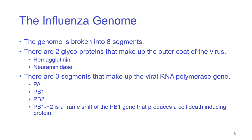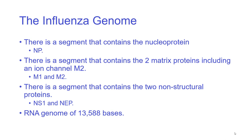The other internal proteins not expressed on the outside of the virus include the nuclear protein. There are matrix proteins: the M2 protein, which is an ion channel that goes through the lipid bilayer, and also an M1 matrix protein. There are also two non-structural proteins — not involved in the shape or structure of the virus — though there is some debate as to what they actually do and how they're expressed. They are called NS1 (non-structural protein 1) and NEP.